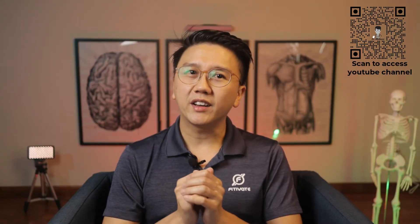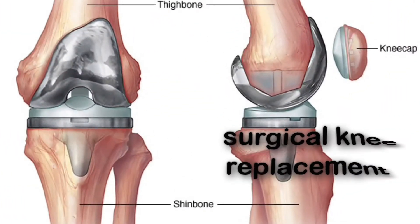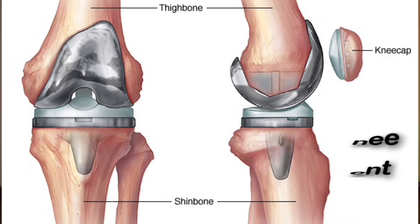Finally, when all else fails or when there are severe deformities of the knee due to osteoarthritis, surgeons may recommend surgical knee joint replacements to replace the worn out knee or to correct deformities.